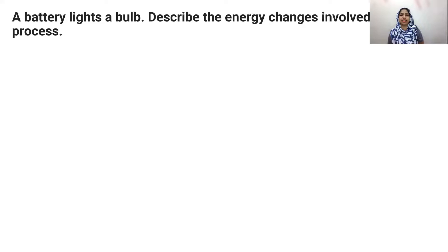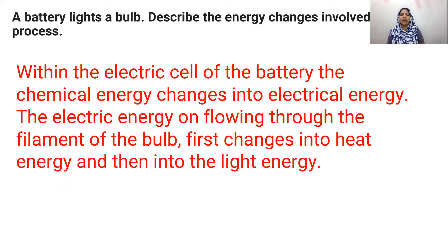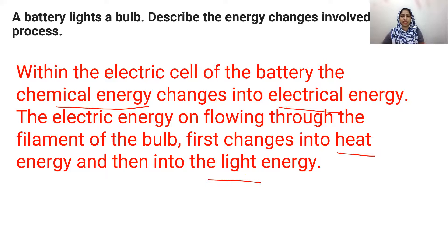Question three: a battery lights up a bulb — describe the energy changes involved. The chemical energy in the battery is first converted into electrical energy. Then the electrical energy is used to heat up the filament of the bulb, which is then converted into light energy. So the transformation is: chemical → electrical → heat → light.